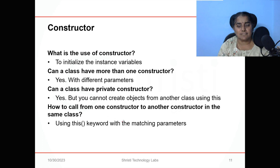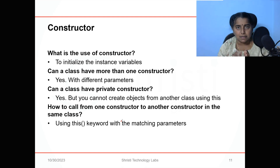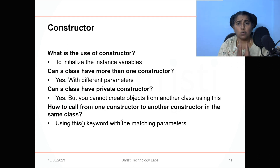Next, let us see a few questions about constructors. What is the use of a constructor? The constructor is used to initialize the instance variables. Can a class have more than one constructor? Yes, of course, with different parameters. If you don't create any constructor for your class, the compiler will automatically generate a default constructor without any parameters. The constructor starts with the class name, followed by parentheses, followed by curly braces within which you can initialize your instance variables. Usually, we prefer to go with a parameterized constructor. If we create our own parameterized constructor, the compiler will not generate any default constructor.